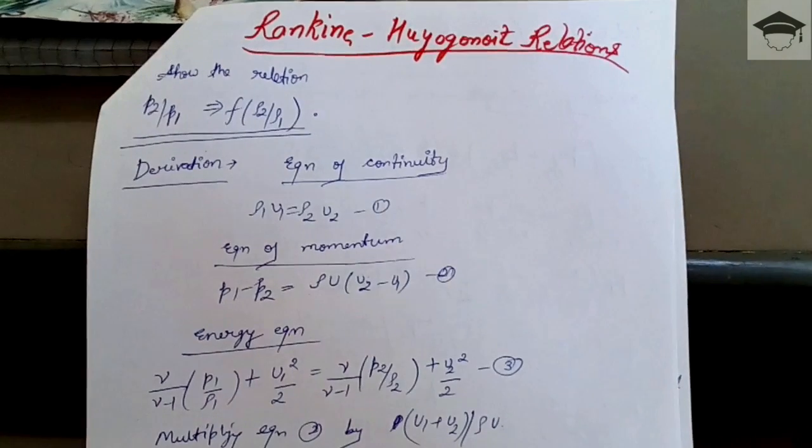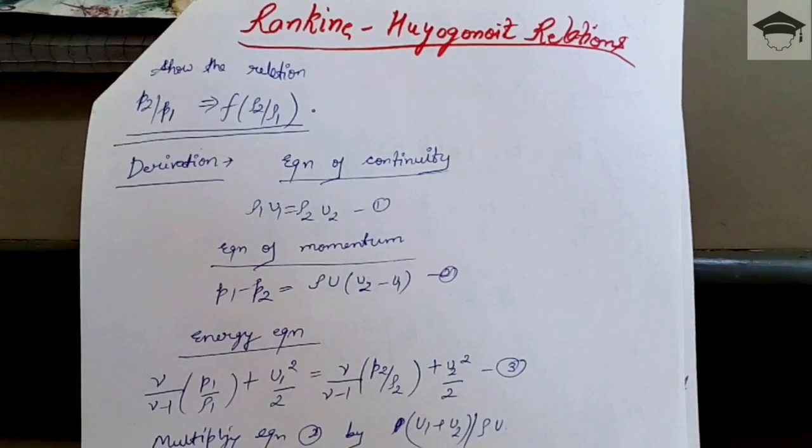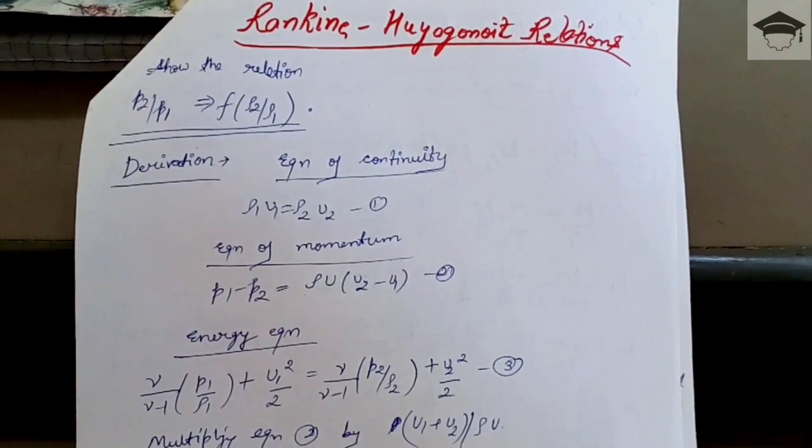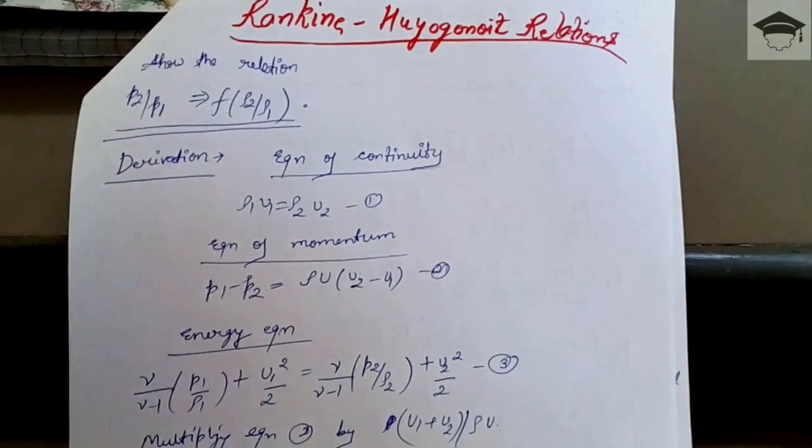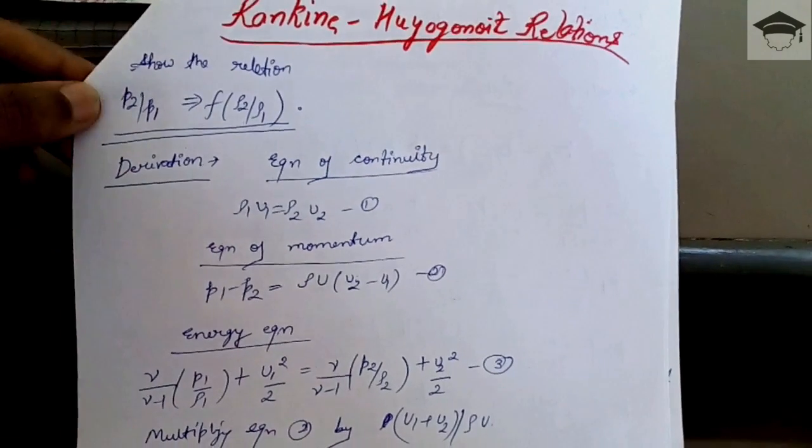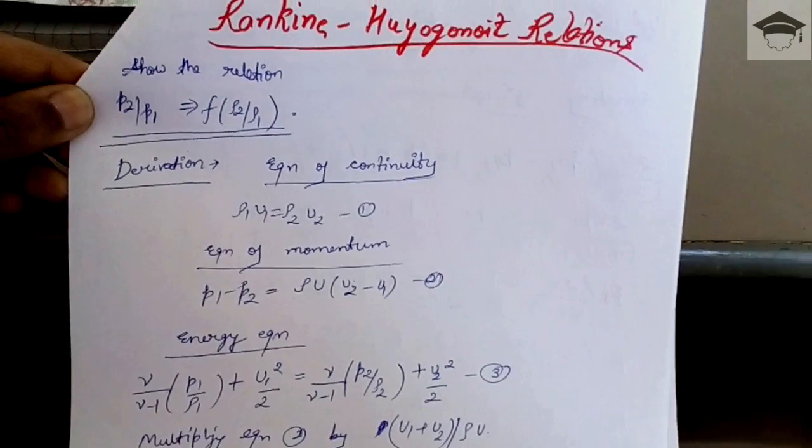In this video I would be explaining the Rankine Huguenot relations. This is the final lecture on compressible flow. If you have not yet watched my previous lectures, all the links are given in the description below.